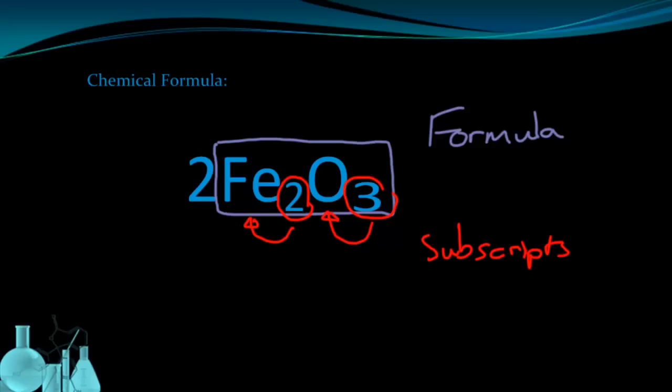Now the only remaining piece here is this large two out in front, and this is a coefficient. A coefficient tells us how many molecules of the following formula there are of this substance, the Fe2O3. So this large number, the coefficient in front, applies to this entire molecule, and it tells us that there are two of those molecules present in the equation.